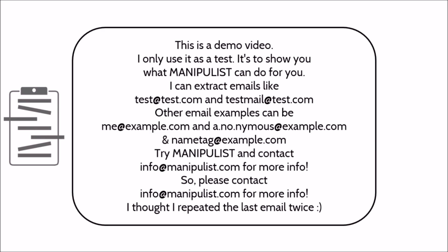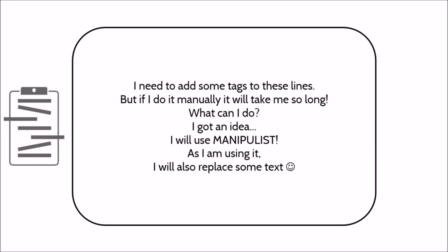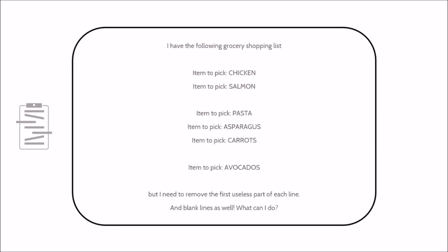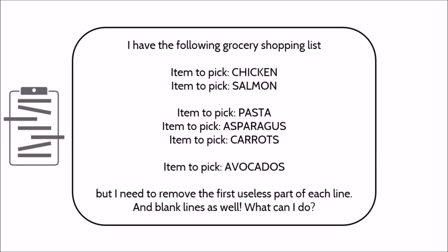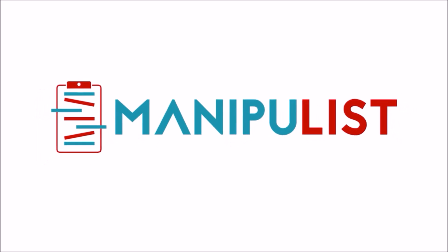You have a large piece of text full of unnecessary information and you want to extract only emails or websites, sorted in ascending order. You are making a website and you want to add tags to each line of your text in a text file, or remove useless strings and blank lines. You can do this and much more with Manipulist.